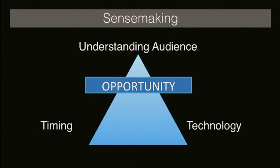Sense making is really a triangulation of three things. First, understanding the audience — meaning their behaviors and their sentiments. Second, understanding technology: what's available now, what will be in the near future, and what I call Star Trek technology — way far in advance — and thinking about its applications to an interface and the user. The third thing is the timing: understanding when the audience is ready for whatever technology you want to use to enhance your storytelling.